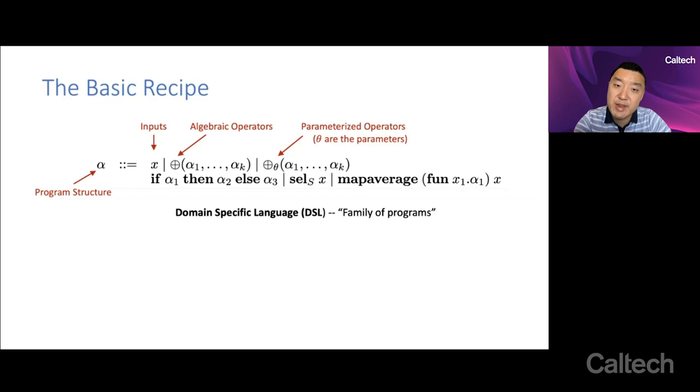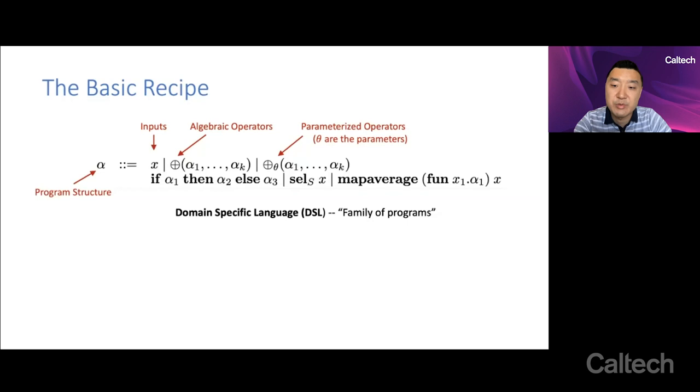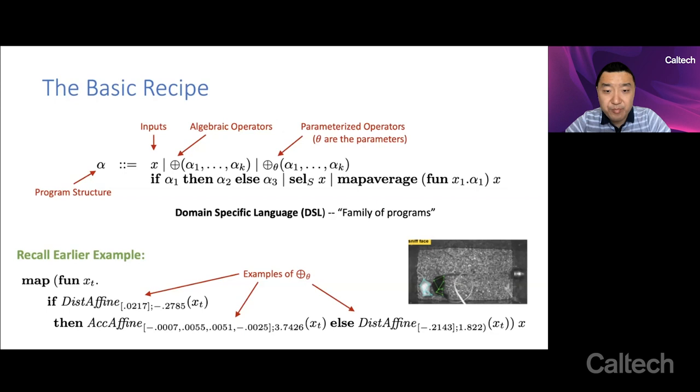And if you recall from the earlier example, we have this program that's trying to classify, this neuro-symbolic program that's trying to classify sniffing, and these distance affine, acceleration affine functions are examples of these parameterized operators, where they are functions with these continuous parameters theta that's denoted in the subscripts below. So this is actually a program from this programming language.